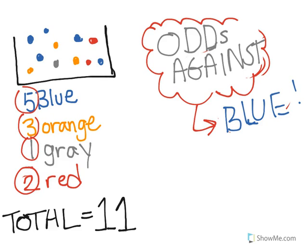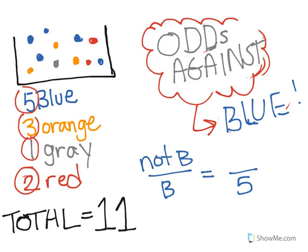Just to be clear — if you wanted to find the odds against picking a blue, blue would be on the bottom and however many are not blue on the top. There are 5 blue in the box, so 11 minus 5 gives you 6 that are not blue, making it 6 to 5 odds against blue.